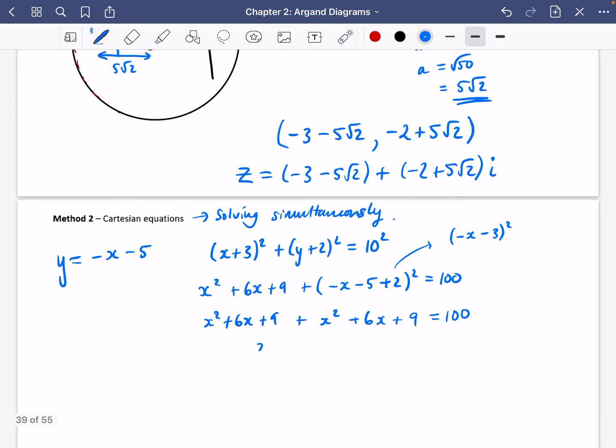So I've now got 2x² plus 12x plus 18 equals 100. I'm going to half everything. So that's x² plus 6x plus 9 equals 50. And I'm going to subtract 50. So that's x² plus 6x minus 41 equals 0.